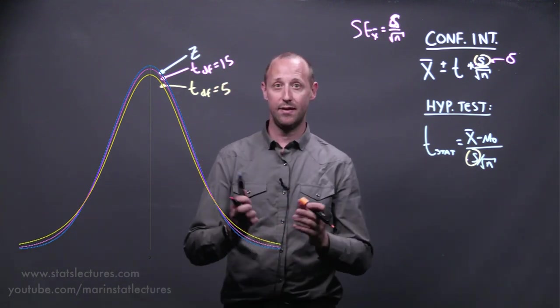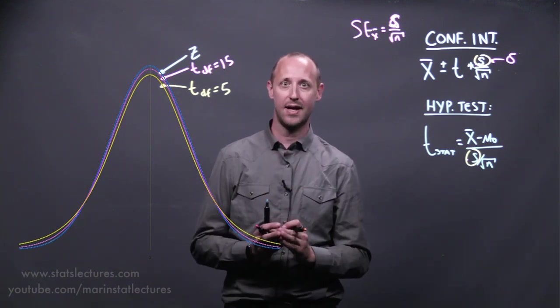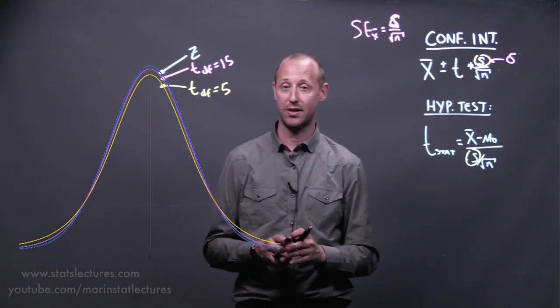What we can notice is that the t-distribution looks similar to the normal, except it's a little wider. That's to account for the extra uncertainty in the estimate of the sample standard deviation.